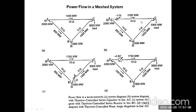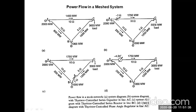By using a series capacitor, a series reactor, or adjusting the phase angle we can balance the power flow. It should be noted that no FACTS controller has been discussed here — these are all traditional, already-existing methods. These are the fundamental techniques: if one line is overloaded, we can balance the load using these three possibilities. This is the concept of power flow in a meshed system.